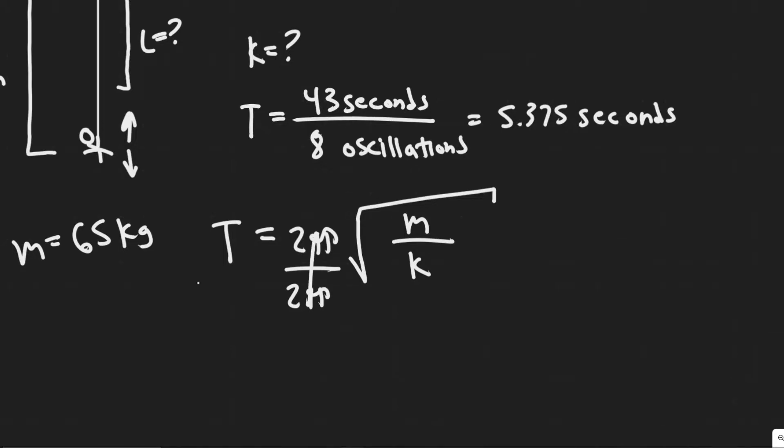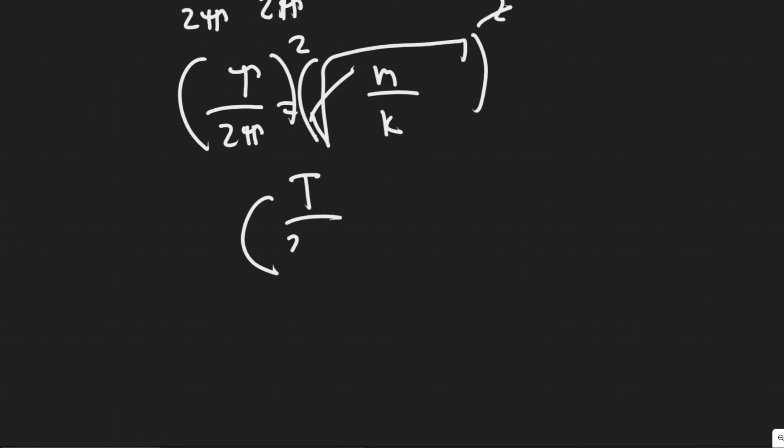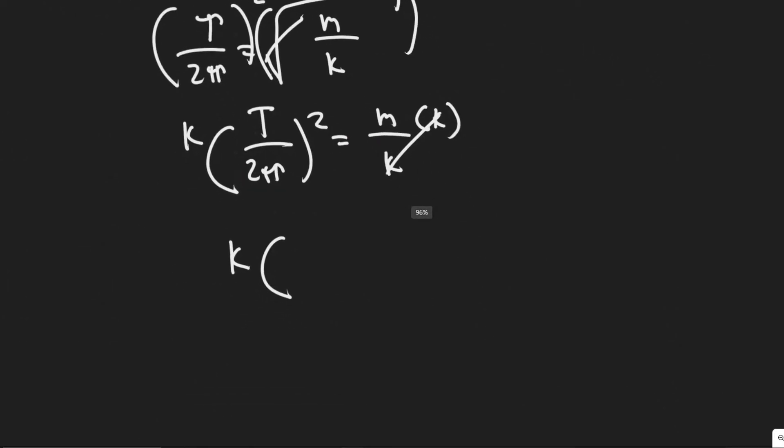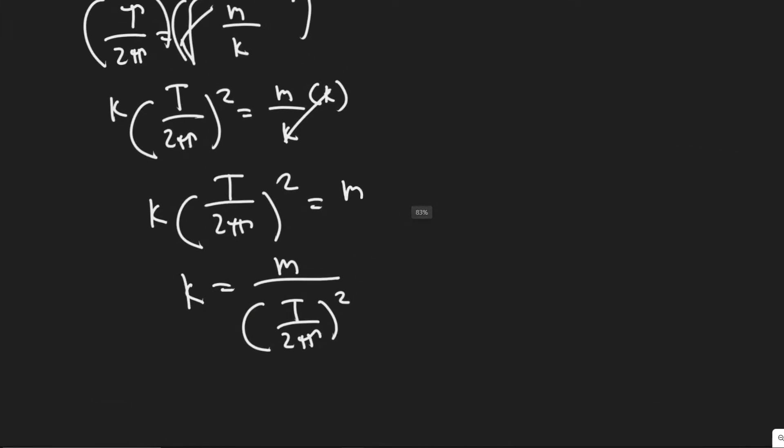Let's go ahead and do that. Starting off, we would divide by 2π. That would give us T divided by 2π equals the square root of mass divided by the spring stiffness constant. To get rid of the square root, you would square both sides. That would cancel this, giving us (T/2π)² equals m/k. To solve for k, you would multiply both sides by k, giving us k(T/2π)² equals m. Then you would divide by this term here to get k by itself, giving us k equals m/(T/2π)².